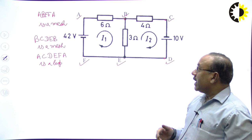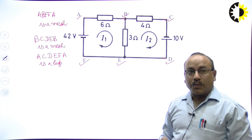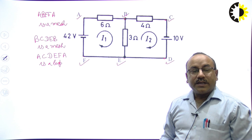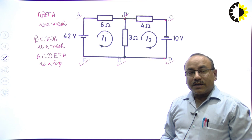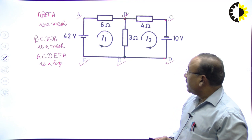From this circuit we can see: A-B-E-F-A is a mesh, B-C-D-E-B is a mesh, but A-C-D-F-A is a loop since it is a closed path but contains two different closed paths inside itself. That is why A-C-D-F-A cannot be called a mesh; it is a loop. This makes the difference between mesh and loop very clear.